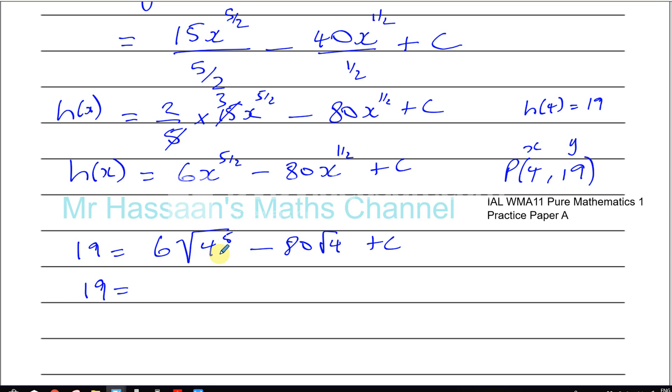Okay, so you've got 19 equals, now the square root of 4, so you have 6 times, and the square root of 4 is 2, and 2 to the power 5 is 32, minus 80 times 2, which is 160, plus C.